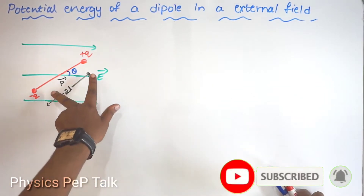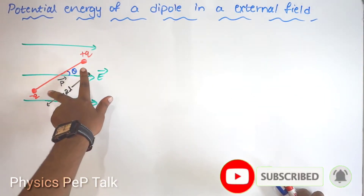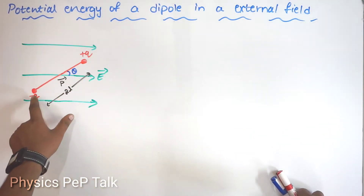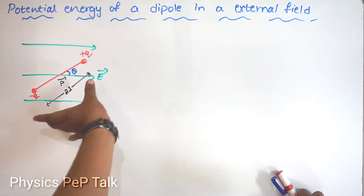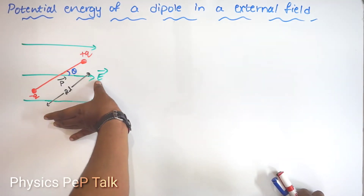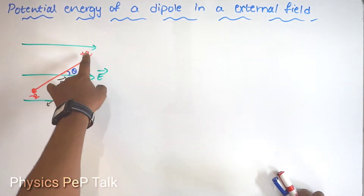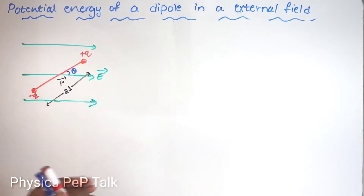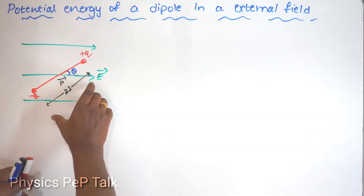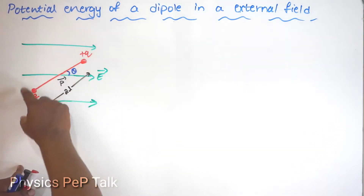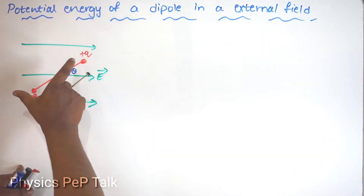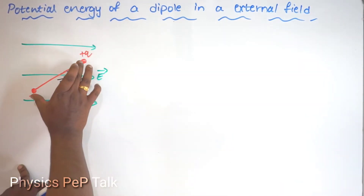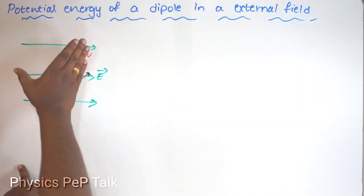First, I will consider a dipole. A dipole is two equal and opposite charges separated by a very small distance — one positive charge and one negative charge. The distance of separation is 2L. I will place this dipole in an external field.